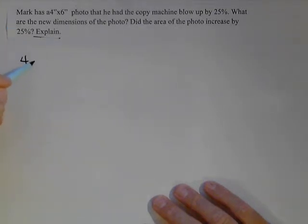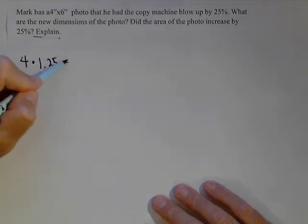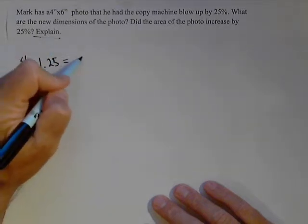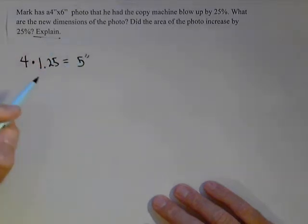And remember, if we're increasing something by 25%, we're finding something that's 125% of the old amount. So 1.25 is what we're going to scale this 4 inch side by. Multiplying 4 by 1.25, we get 5 inches.